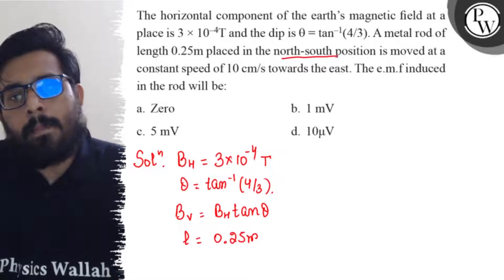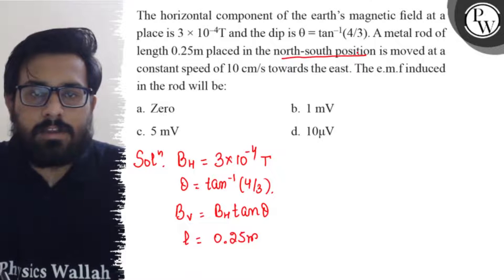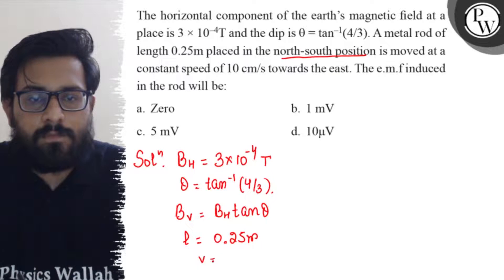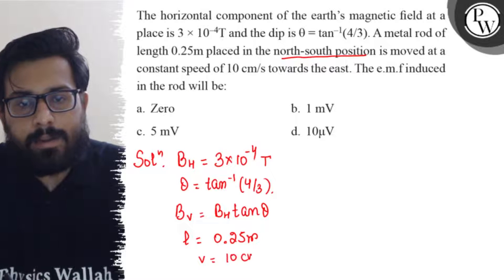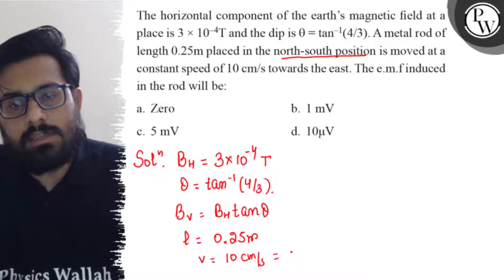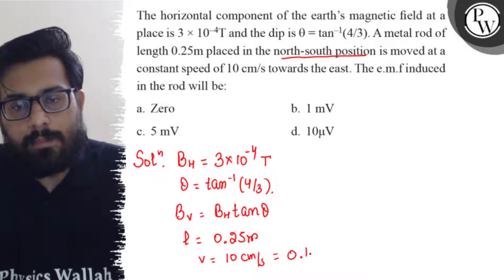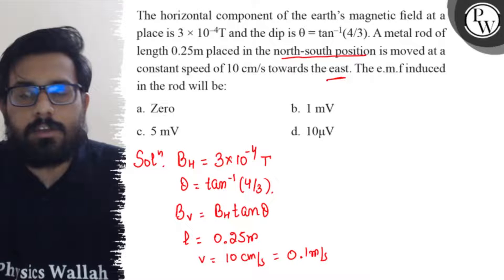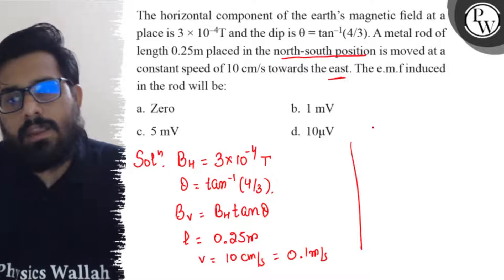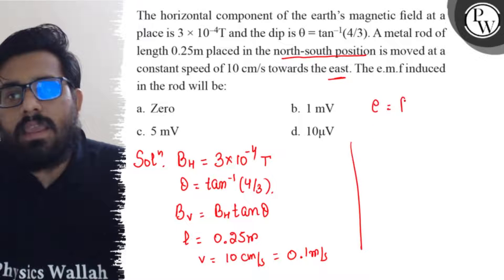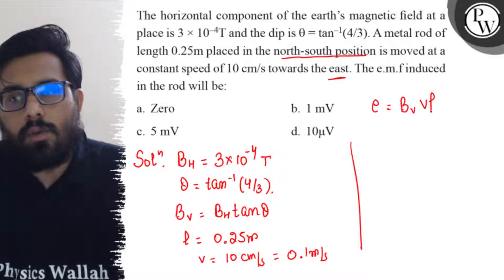So the rod is placed in the north-south direction and it is moving with the speed of 10 centimeter per second in the east direction. So according to the concept, we know that E equals BV into V into L.